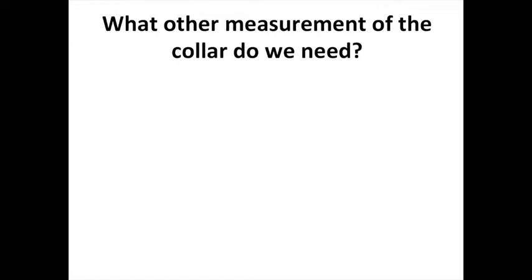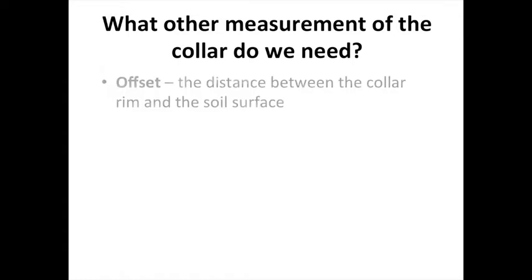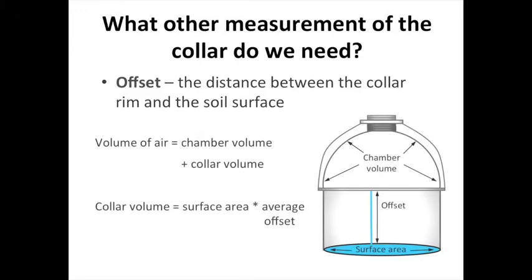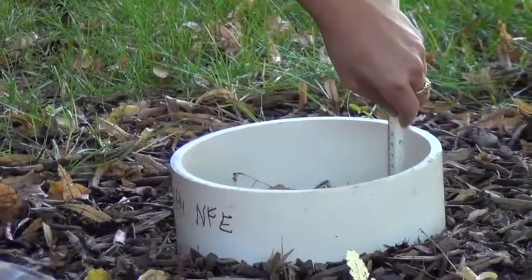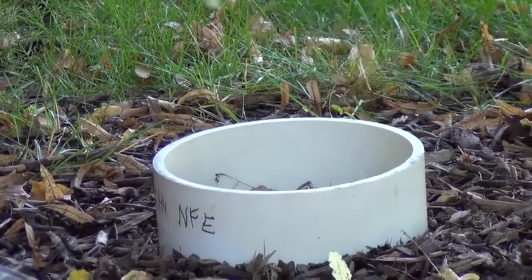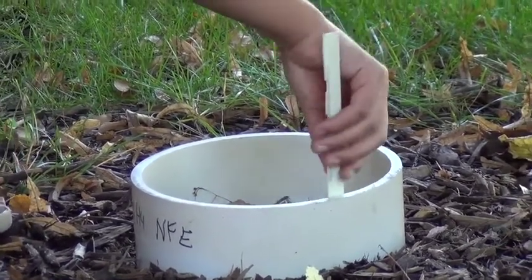Besides the surface area of the soil, what other aspect of the collar do we need to measure in order to calculate our CO2 efflux? We need to measure the height of the collar from the soil, also known as the offset. This determines the volume of air we are measuring, and since we are measuring CO2 concentration, we need the volume in order to calculate an amount of CO2. To get our average offset, we measure the height of the collar at several locations and take an average.